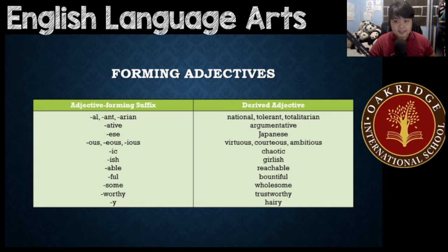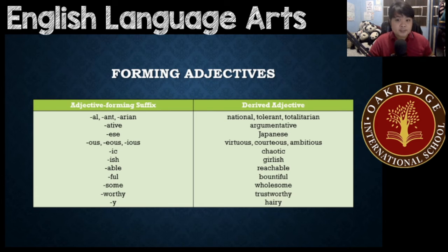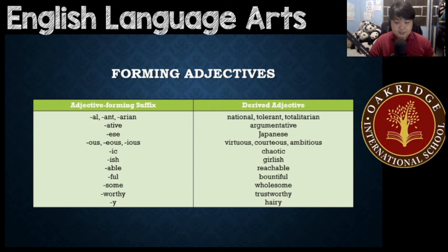'-ic', like 'chaotic'. '-ish', like 'girlish'. '-able', like 'rechargeable'. '-ful', like 'bountiful'. '-some', like 'wholesome'. '-worthy', like 'trustworthy'. And '-y', like 'hairy'.